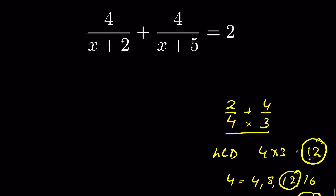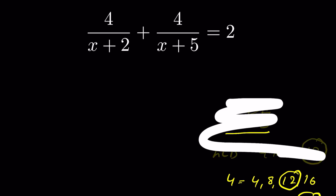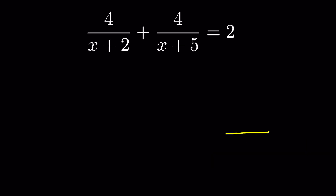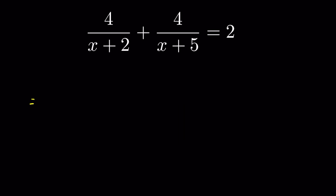Similarly, for (x+2) and (x+5) there is no common divisor. Therefore we multiply these two to get the least common denominator, which will be (x+2) times (x+5).